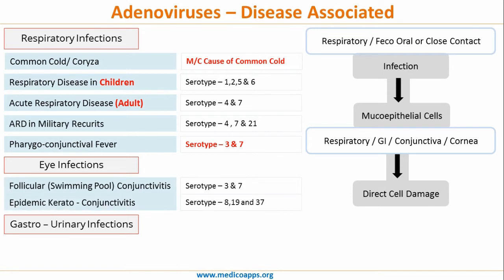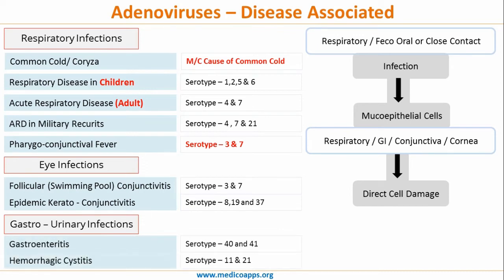Eye infections: adenovirus causes follicular or swimming pool conjunctivitis, where serotypes 3 and 7 are involved. It also causes epidemic keratoconjunctivitis, where serotypes 8, 19, and 37 are involved. It can cause gastroenteritis or diarrhea with serotypes 40 and 41, and hemorrhagic cystitis with serotypes 11 and 21.